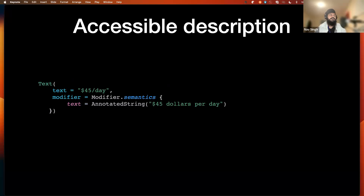For accessible descriptions in Compose, we use semantics to provide text that TalkBack will speak when the component is selected. If we don't provide this text, it will speak the actual text of the component. For example, a price shown as '$45/day' would be spoken as 'dollar 45 slash day,' which isn't meaningful. Instead, using semantics we can expose it as '$45 dollars per day' for better user understanding.